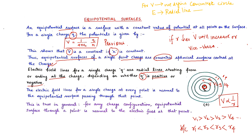These electric field lines will be radially outward or inward depending upon the given charge. If the charge is positive, electric field lines will be radially outward, and if the charge is negative, the electric field lines will be inward. The electric field lines for a single charge at every point are normal to the equipotential surfaces passing through that point.